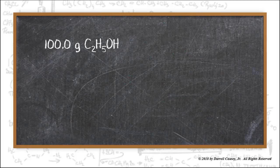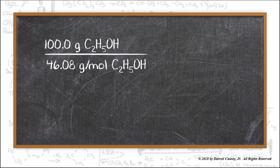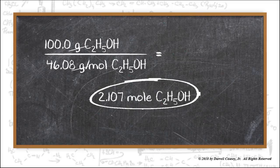Now let's do the same for ethanol. 100 grams of ethanol divided by 46.08 grams per mole and we'll get 2.107 moles of ethanol.